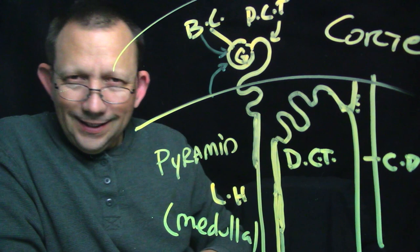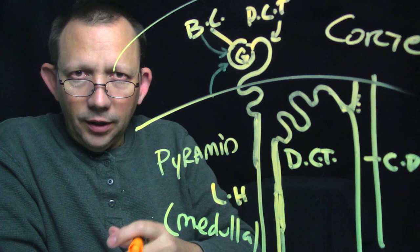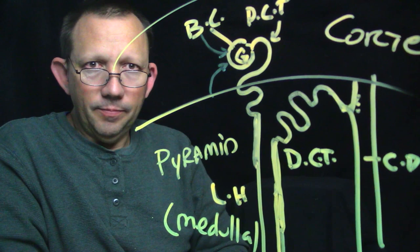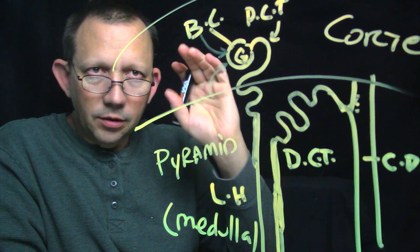The descending loop of Henle — the narrow part — is simple squamous epithelium: one layer, good for diffusion, good for getting stuff out. The rest of the nephron is all cuboidal — simple cuboidal epithelium — one layer of cube-shaped cells, really good for moving stuff around as well. So: simple squamous in the narrow descending loop, and simple cuboidal for the rest.